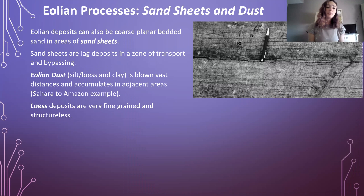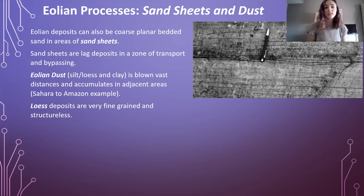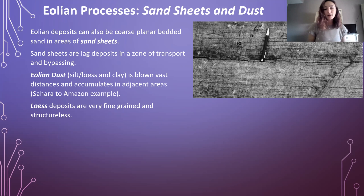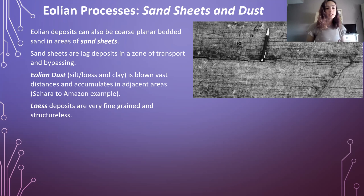Now we can go into a little bit more detail about sand sheets and dust. Sand sheets consist of coarse planar bedded sand, as shown in the image to the right. They are coarser than typical aeolian sand deposits because they are lag deposits in a zone of transport and bypassing — we talked about lag deposits being left over from deflation, and this is typical of what sand sheets will be.